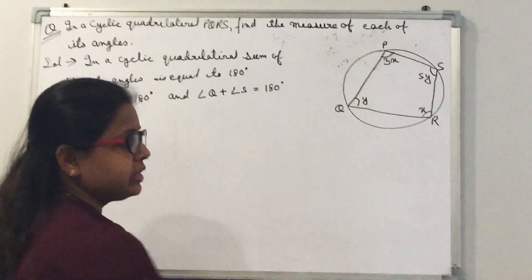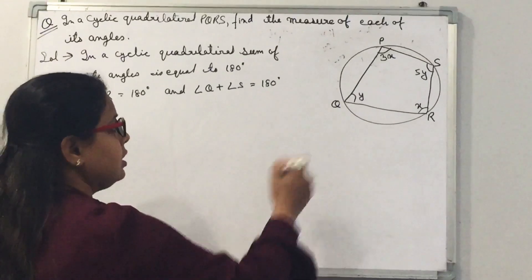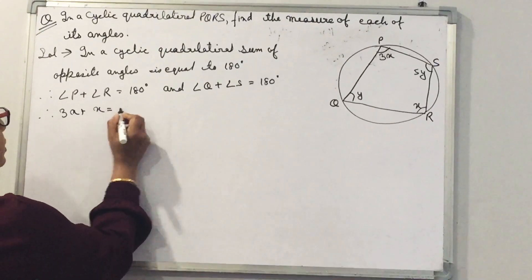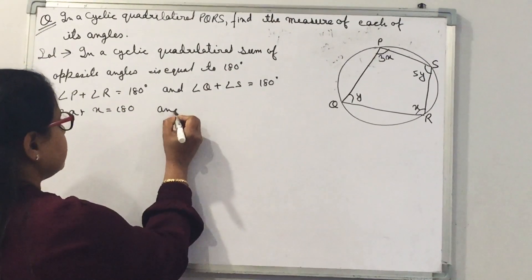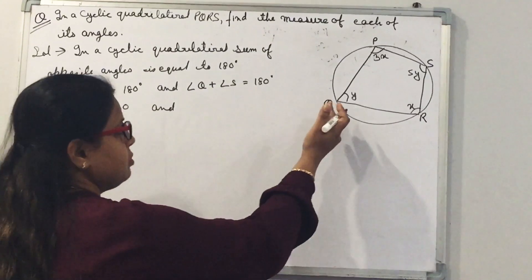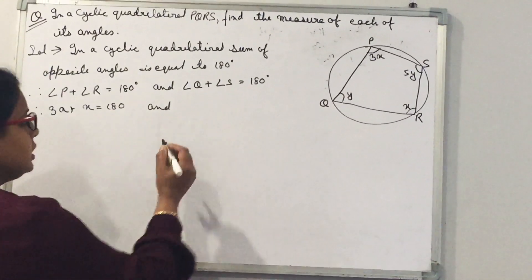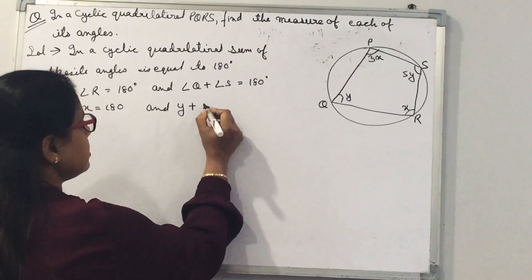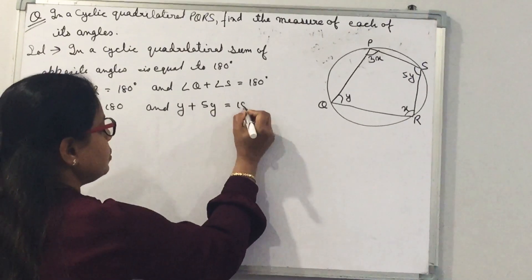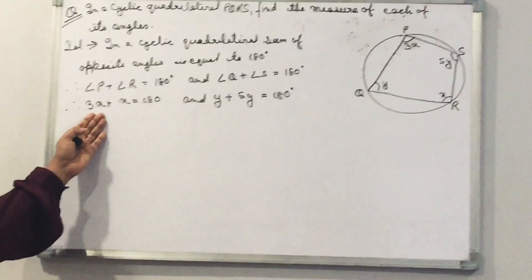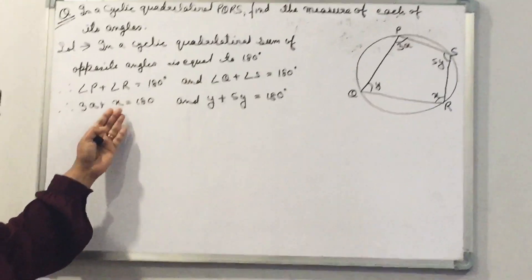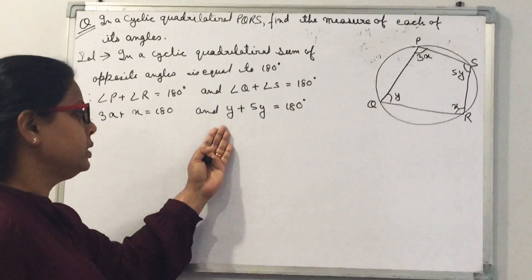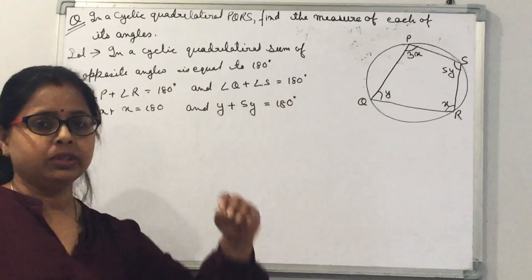The value of angle P is 3x and the value of angle R is x. Therefore, 3x plus x is equal to 180 degrees. The value of angle Q is y and the value of angle S is 5y. So angle P equals 3x, angle R equals x, angle Q equals y, and angle S equals 5y.